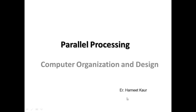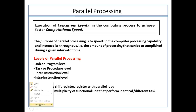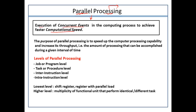Hello friends. In this series on learning computer organization and design, today's topic is focused on understanding parallel processing. As the name specifies, parallel processing means that when your system is able to execute some concurrent events in the computing process to achieve computational speed, or in simple terms, when your system has the capability to process multiple operations at the same instant of time, then we say the system has the facility of parallel processing.